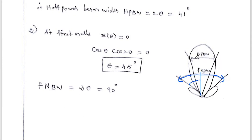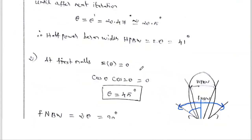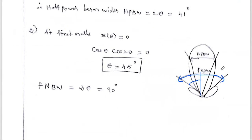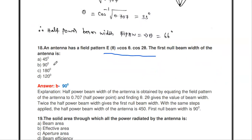To summarize the method: for half power beam width, equate E(θ) to 0.707, find θ, then HPBW = 2θ. For first null beam width, equate E(θ) to zero, find θ, then FNBW = 2θ. In this problem, the first null beam width is 90 degrees.